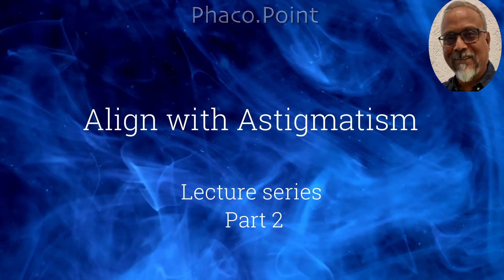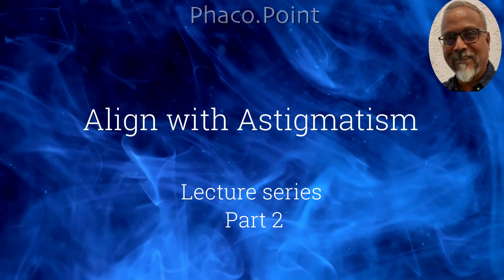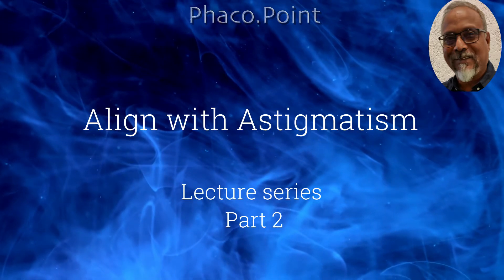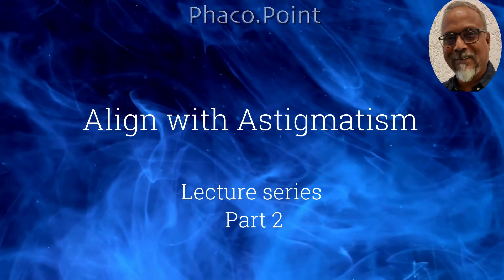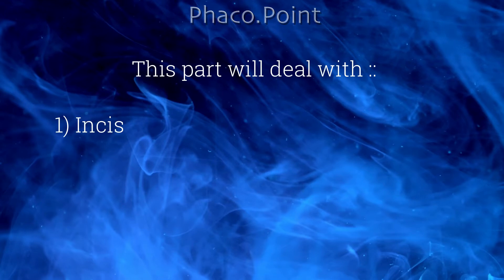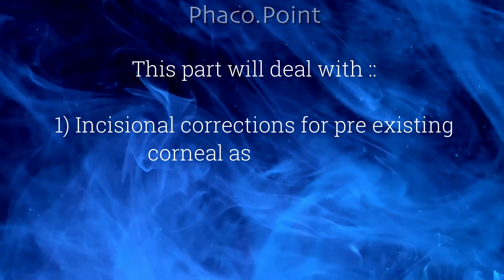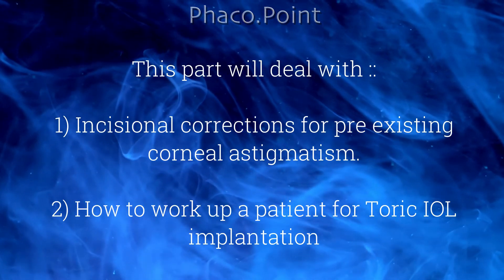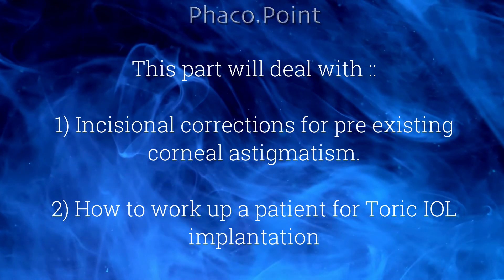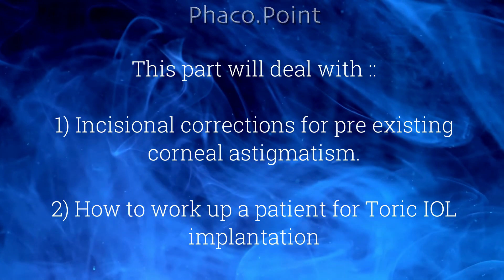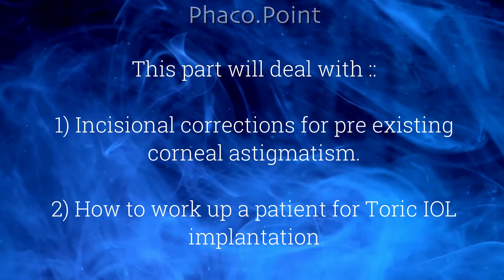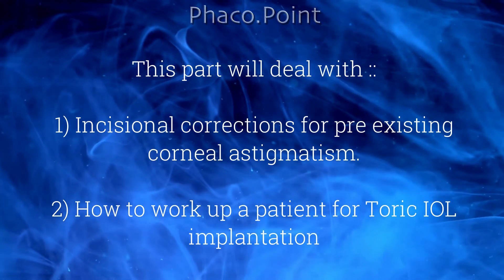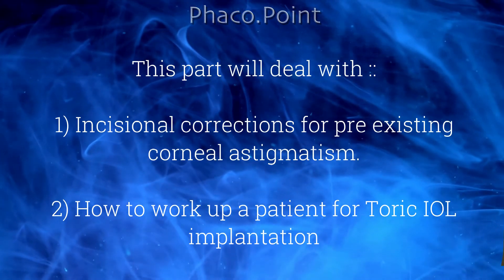Hello and welcome, my dear friends and colleagues. This is the second part of the lecture series on aligning with astigmatism. In this segment we will address the pros and cons of incisional correction of astigmatism and our preferred technique of working up a case for toric IOL implantation while factoring in the posterior corneal toricity as well.